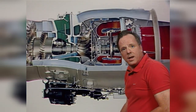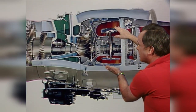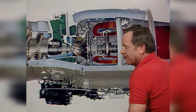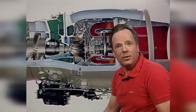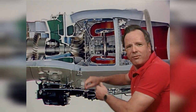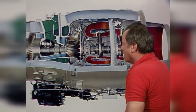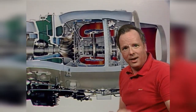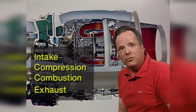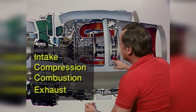You have the burner cans where combustion takes place, so that's the next event. And finally, the last event is things go out the back with a fury, and that's exhaust. So let's take a look at the four events in the continuous combustion cycle of a turbine engine.